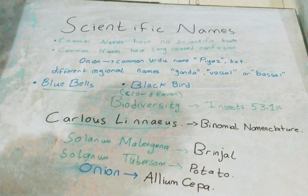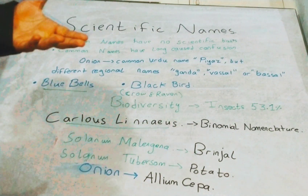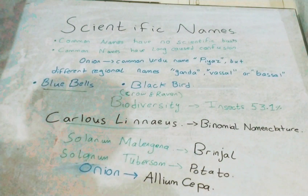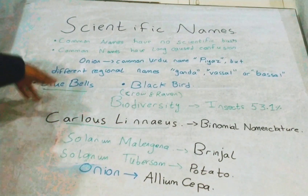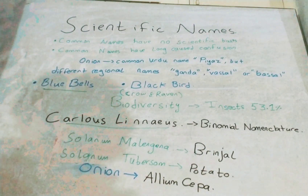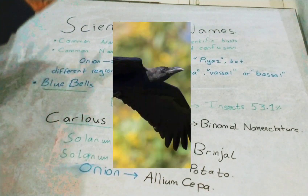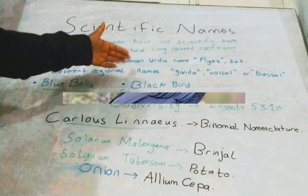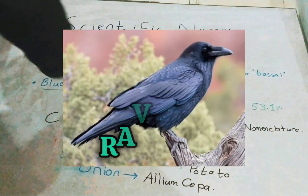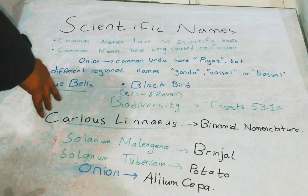Another example is 'bluebells' — many plants with bell-shaped flowers can be referred to as bluebell, which again has no scientific basis. Similarly, with 'blackbird,' both a crow and a raven can be referred to as a blackbird, further adding to the confusion in terminology.